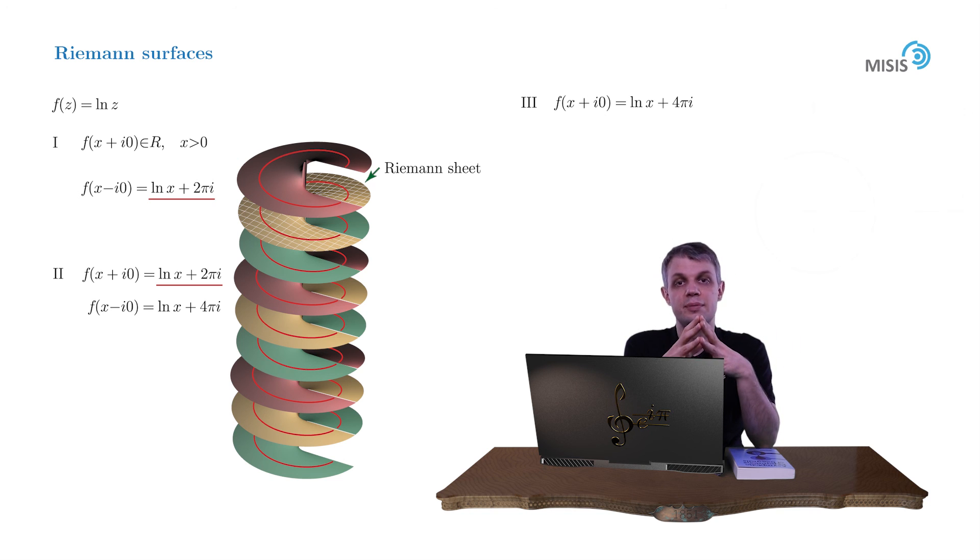In our next video we'll discuss Riemann surfaces with only a finite amount of Riemann sheets. And those turn out to be quite nontrivial from the topological point of view. They always contain self-intersections.